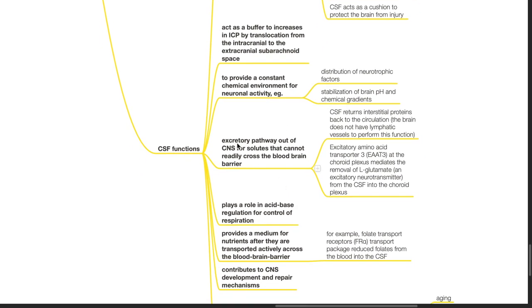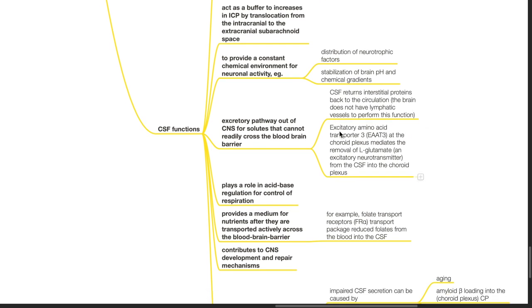CSF offers an excretory pathway out of CNS for solutes that cannot readily cross the blood-brain barrier. For example, CSF returns interstitial proteins back to the circulation as the brain does not have lymphatic vessels to perform this function. The excitatory amino acid transporter 3 at the choroid plexus mediates the removal of L-glutamate, which is an excitatory neurotransmitter, from the CSF into the choroid plexus.